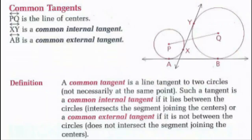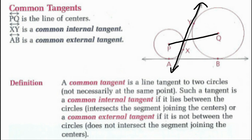A common tangent is a line that joins the points of contact of two circles. Line PQ is the line of centers. XY is the common internal tangent — it lies between the circles and intersects the segment joining the centers. AB is the common external tangent — it is not between the circles and does not intersect the segment joining the centers. A common internal tangent lies between the circles, while a common external tangent lies outside.